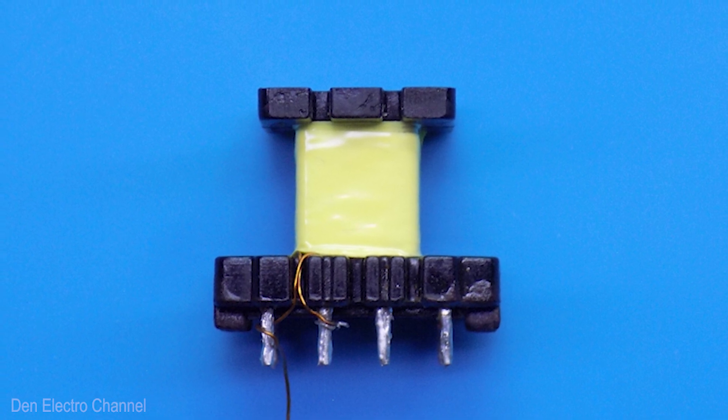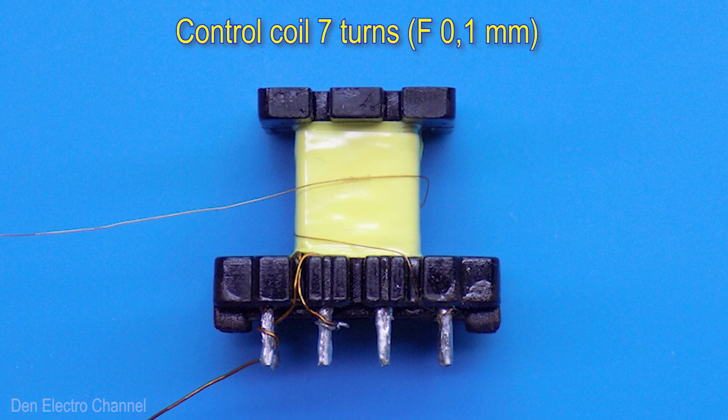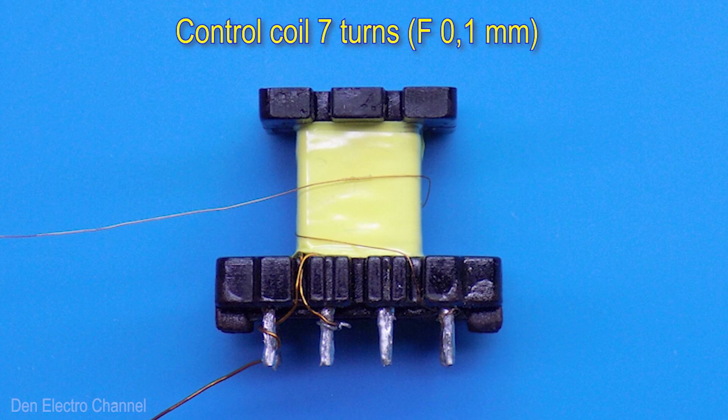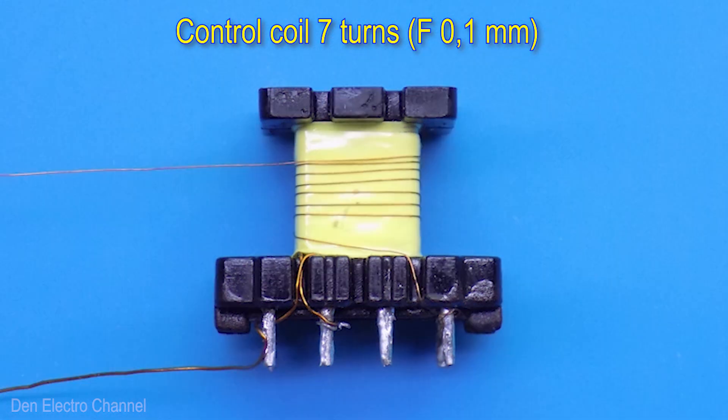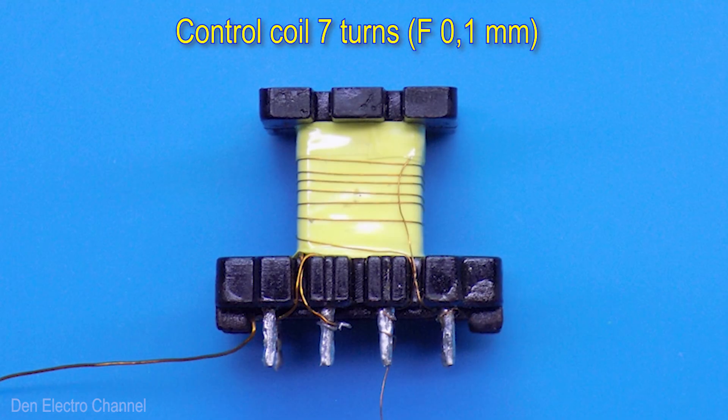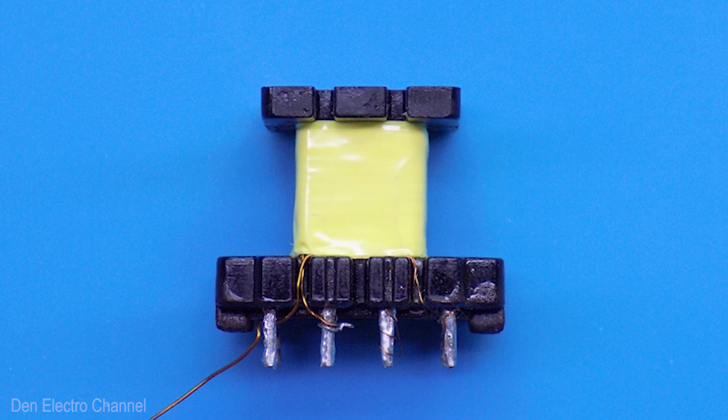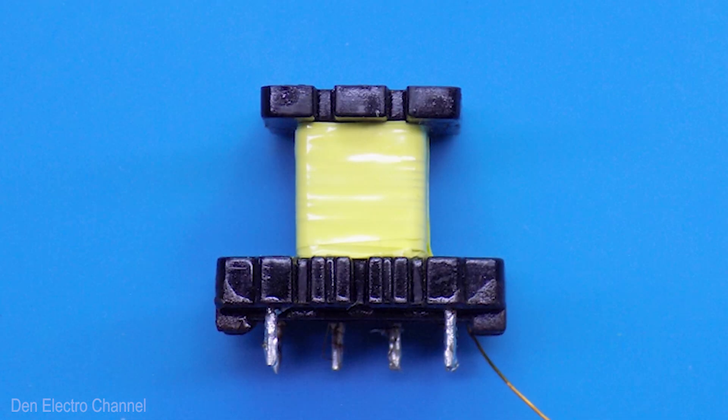Then I use mylar tape to create three layers of insulation. Then, starting from the fourth leg, I make a control winding. I also insert the wire from the left behind the frame, bring it out to the right, and make seven turns. Then I lower it down, wrap it around the third leg, and cut it off. Then two layers of insulation, and turn the frame over to the other side.